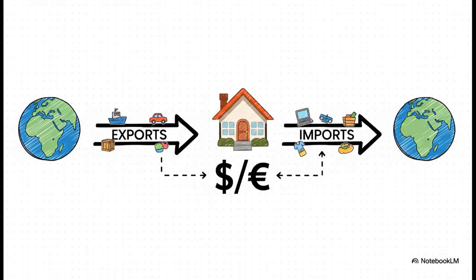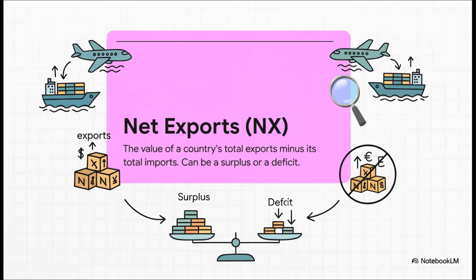The moment we open up to trade, two brand new forces come into play: exports and imports. How much we export depends on how well the rest of the world is doing — if their economies are booming, they buy more of our stuff. But how much we import depends on how well we're doing — if our economy is strong, we buy more of their stuff. And of course, both are massively influenced by the exchange rate. Economists boil this whole relationship down into one single number called net exports, or NX. You take the total value of everything your country sold to the world and subtract the total value of everything it bought from the world. If that number is positive, you've got a trade surplus; if it's negative, you've got a trade deficit.